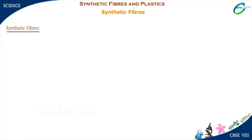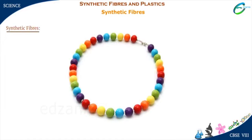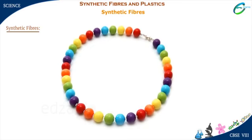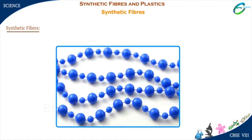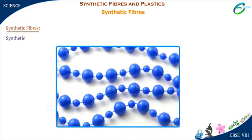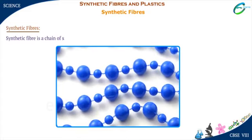Synthetic fibers. See this beautiful bead necklace? It is made by joining many small beads with the help of a thread. A necklace is a long chain of beads prepared by bringing together many small beads. Similarly, a synthetic fiber is also a chain of small units joined together.